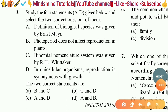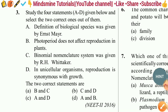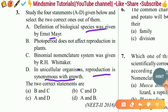The third question: Study the four statements A to D and identify the two correct ones. The definition of biological species was given by R.H. Whittaker, and in unicellular organisms reproduction is synonymous with growth. The two correct statements are A and D, so the right answer is option C.